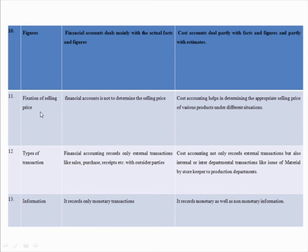Tenth difference is fixation of selling price. Financial accounting cannot determine the selling price under any circumstances and provides no guideline in this regard. Cost accounting helps to determine the appropriate selling price of various products under different situations.